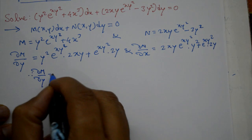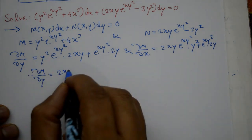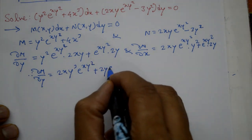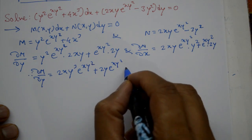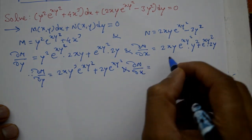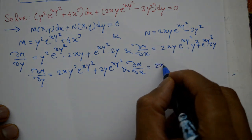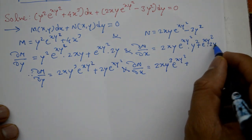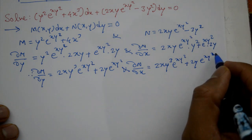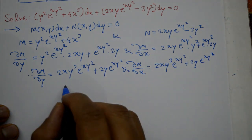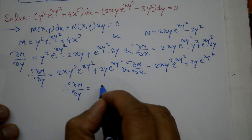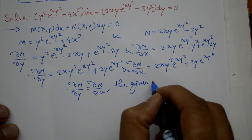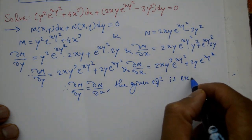Therefore ∂M/∂y is equal to 2xy³ · e^(xy²) + 2y · e^(xy²), and ∂N/∂x is equal to 2xy³ · e^(xy²) — dono same hain. Therefore ∂M/∂y = ∂N/∂x ho gaya.